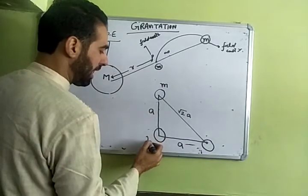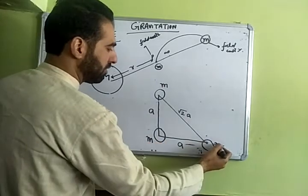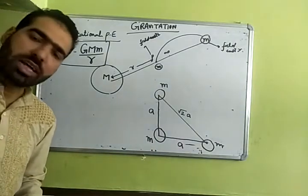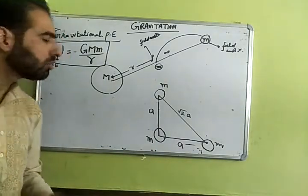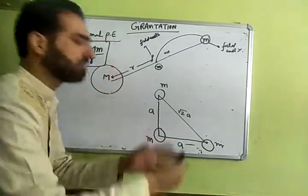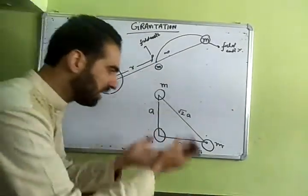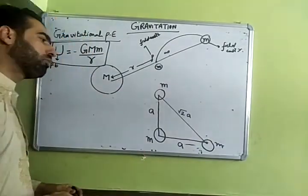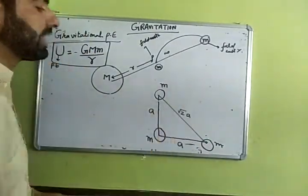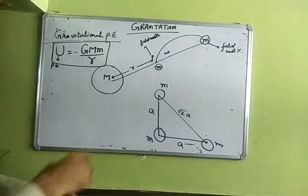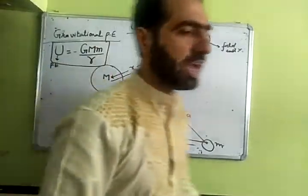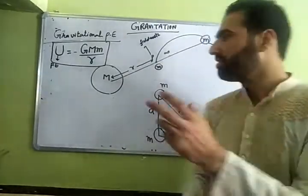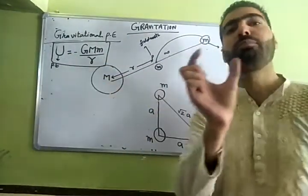Say each mass is m, m, m. When you calculate gravitational potential energy, remember: whenever you have two or more masses situated at certain points and you need to find the gravitational potential energy of this system...